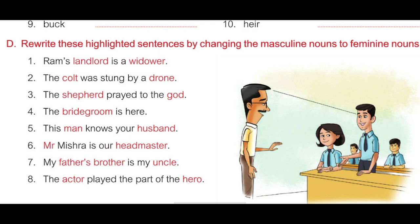Goddess, G-O-D-D-E-S-S. Fourth: 'The bridegroom is here.' Answer: 'The bride is here, B-R-I-D-E.' Fifth: 'This man knows your husband.' Answer: 'This woman, W-O-M-A-N, knows your wife, W-I-F-E.' Sixth: 'Mr. Mishra is our headmaster.' Answer: 'Mrs. Mishra is our headmistress, H-E-A-D-M-I-S-T-R-E-S-S.' Seventh: 'My father's brother is my uncle.' Answer: 'My mother's sister, M-O-T-H-E-R-apostrophe-S sister, S-I-S-T-E-R, is my aunt, A-U-N-T.'